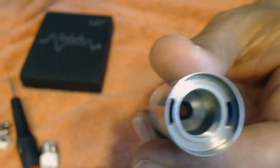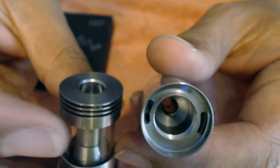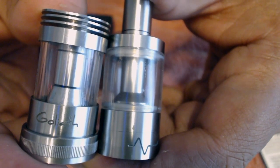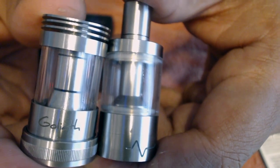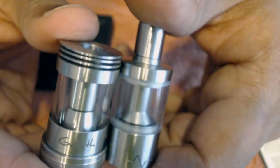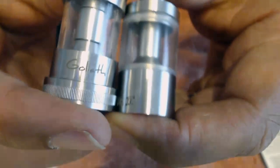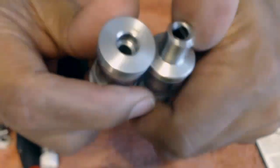What they did is they got rid of this heat sink and gave you more juice capacity. But it's very, very similar. The heat sink, the old one is a tad bit taller. But yet you get more juice capacity, and the chimney, I guess, is not as wide, which makes it a better flavor. But they did get rid of this heat sink to give you more juice capacity.